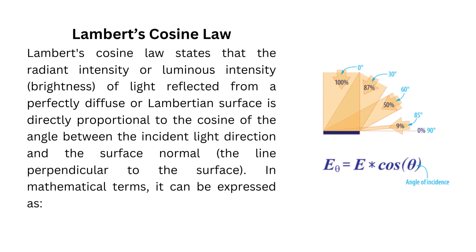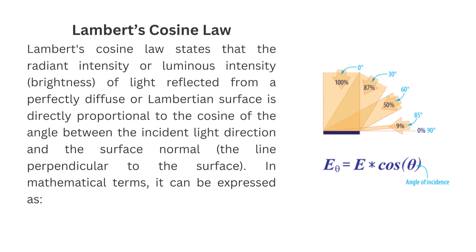Lambert's cosine law states that the radiant intensity or luminous intensity of light reflected from a perfectly diffuse or Lambertian surface is directly proportional to the cosine of the angle between the incident light direction and the surface normal. In mathematical terms, eθ is the intensity of the reflected light, e is the intensity of the incident light, and θ is the angle between the incident light direction and the surface normal.